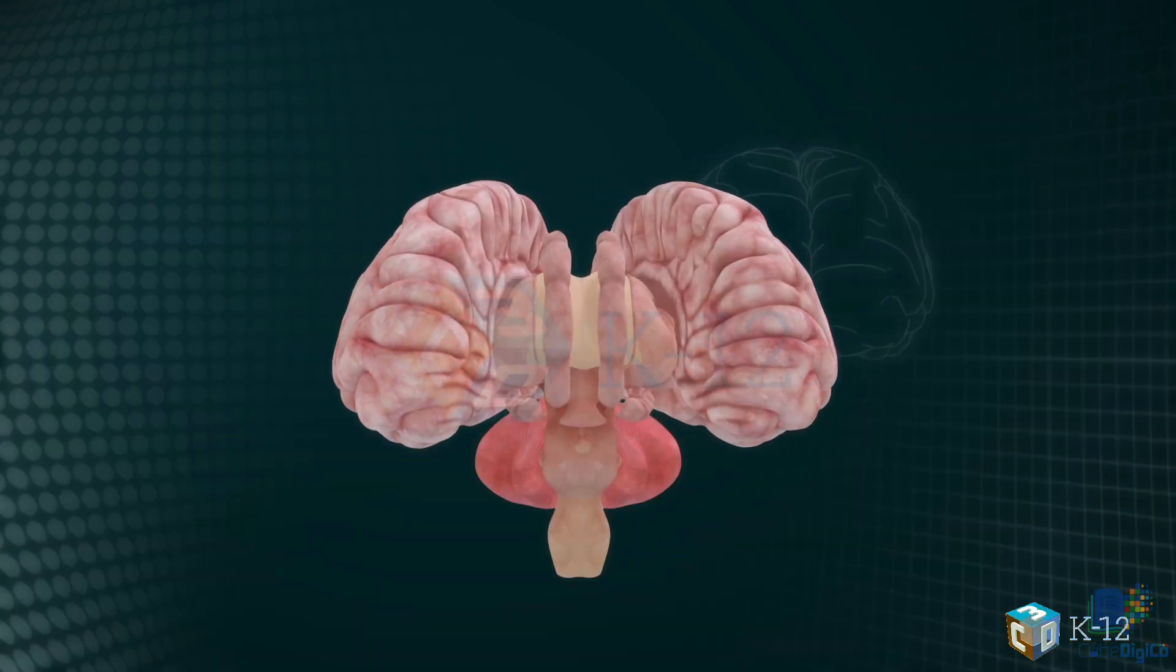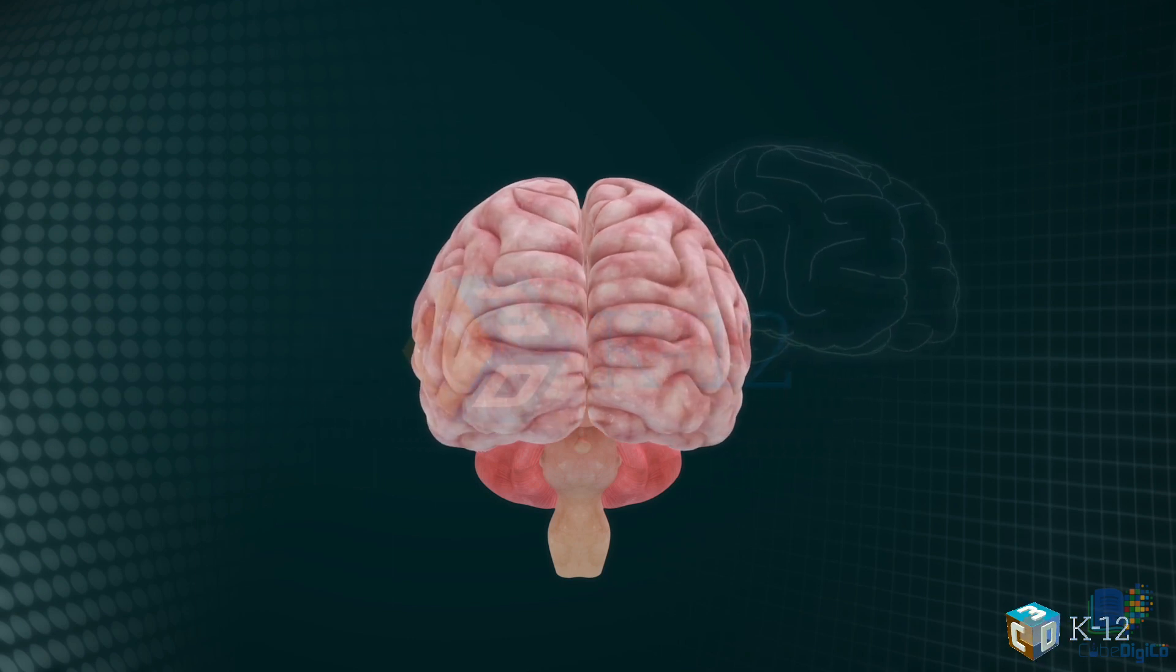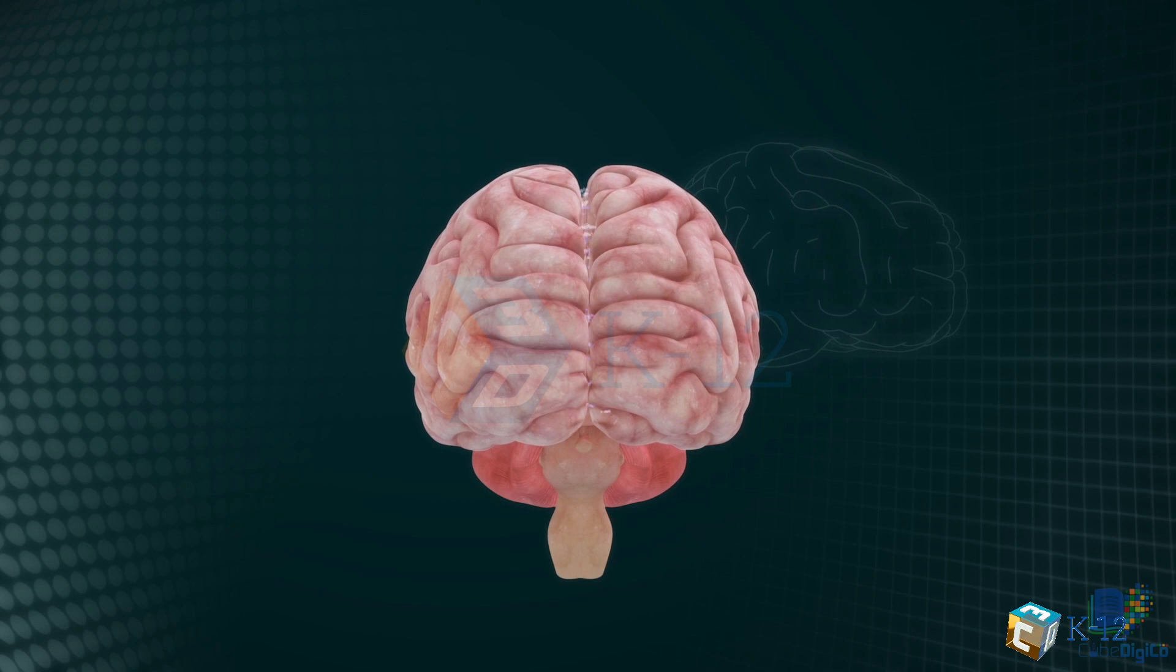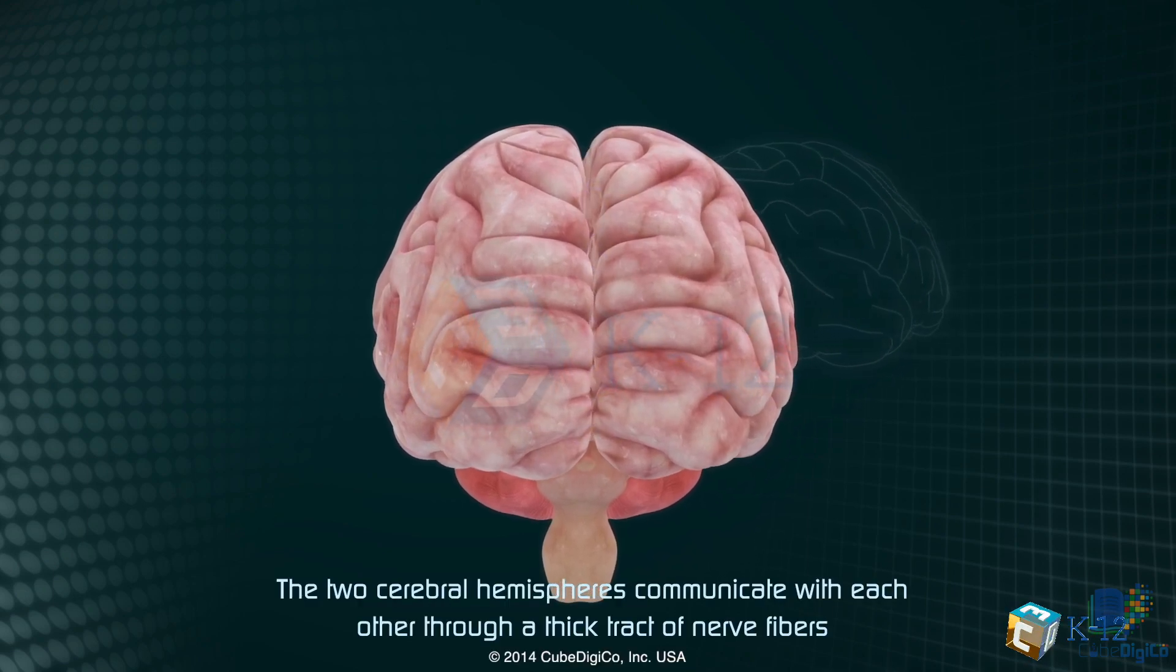The cerebrum is split into two halves, hemispheres, by a deep fissure. Despite the split, the two cerebral hemispheres communicate with each other through a thick track of nerve fibers that lie in the base of this fissure.